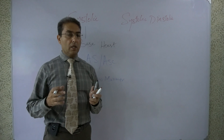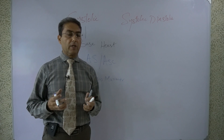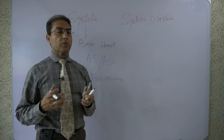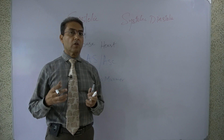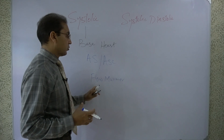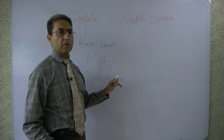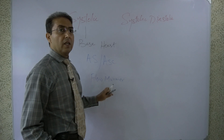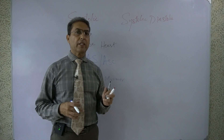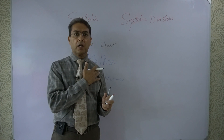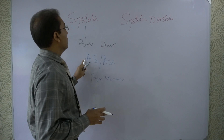In aortic regurgitation, the classical murmur is a decrescendo diastolic murmur, but when a large amount of blood is present at end-diastole in the left ventricle, a huge cardiac output passes through the aortic valve, producing a functional flow murmur. Anemia and aortic regurgitation can produce functional flow murmurs that radiate into the neck. Sub-aortic stenosis murmurs can also radiate into the neck. Pulmonary valve murmurs usually do not radiate above the clavicle.